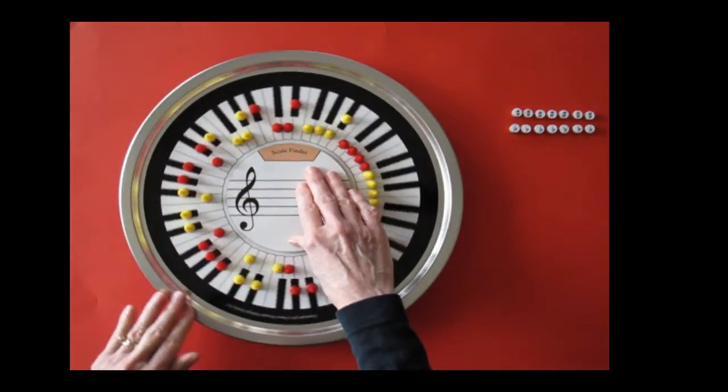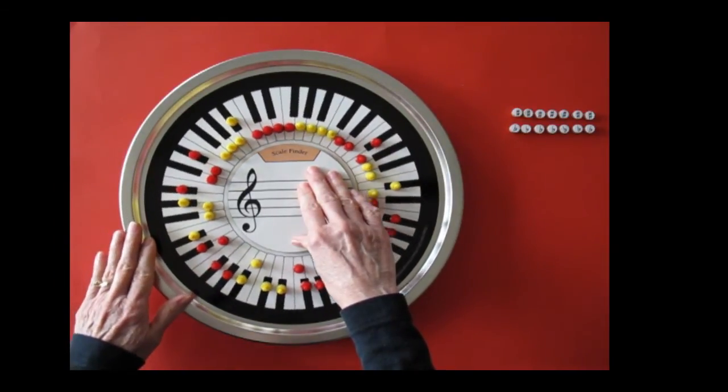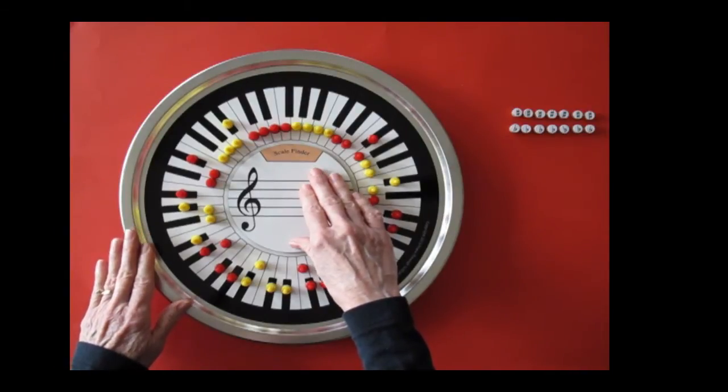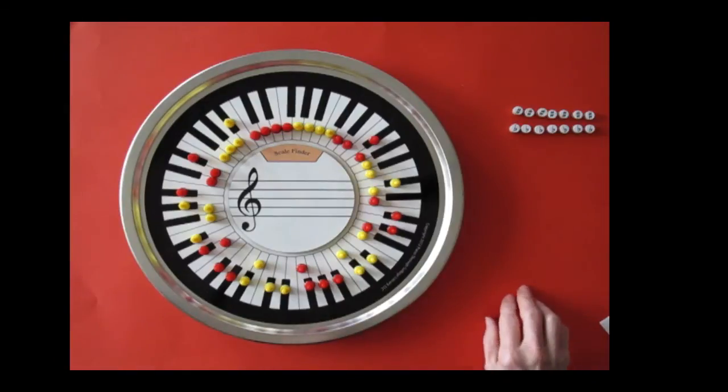Locate the two tetrachords with white keys, and the scale finder shows the C major scale, beginning and ending with C. The key signature for C major has no sharps or flats.